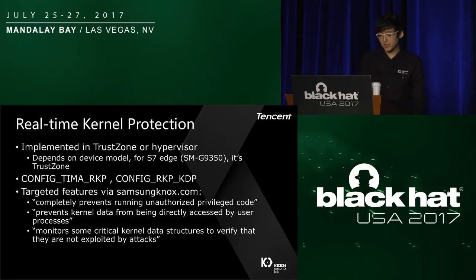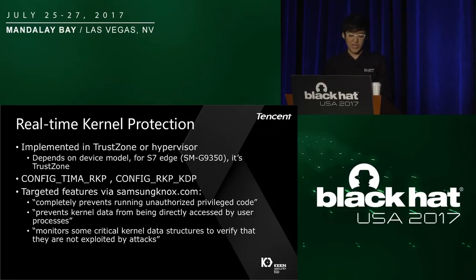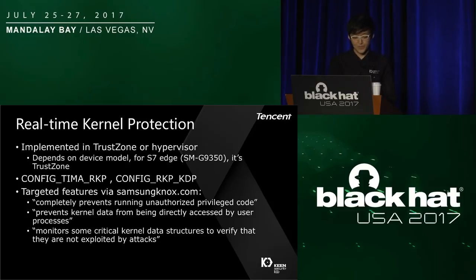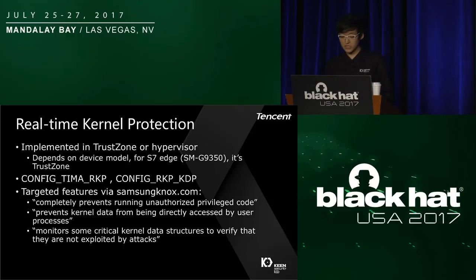Let's focus on Real-time Kernel Protection — RKP. RKP is implemented in both the Linux kernel and the secure world. The secure world can be a hypervisor; it depends on the device model. For my S7, I believe the secure world is TrustZone. According to samsungnox.com, RKP provides three security features: first, it completely prevents running unauthorized privileged code; second, it prevents kernel data from being directly accessed by user processes; and third, it monitors critical kernel data structures to verify they are not being exploited. In summary, you cannot run your own code in the kernel or manipulate kernel data before bypassing RKP.